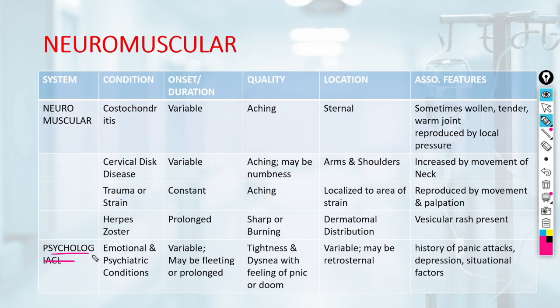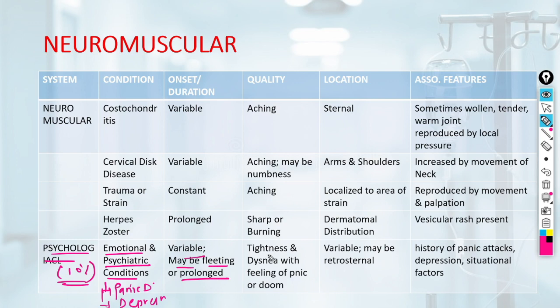Psychological causes can be responsible for 10% of patients presenting to the emergency department. Patients typically present with emotional and psychiatric conditions like panic disorder or depression. Pain is variable — fleeting or prolonged. Patients are typically female, presenting with tightness of chest and dyspnea with a feeling of panic or doom. Location is variable, sometimes retrosternal. Associated features include history of panic attacks, depression, and situational factors.